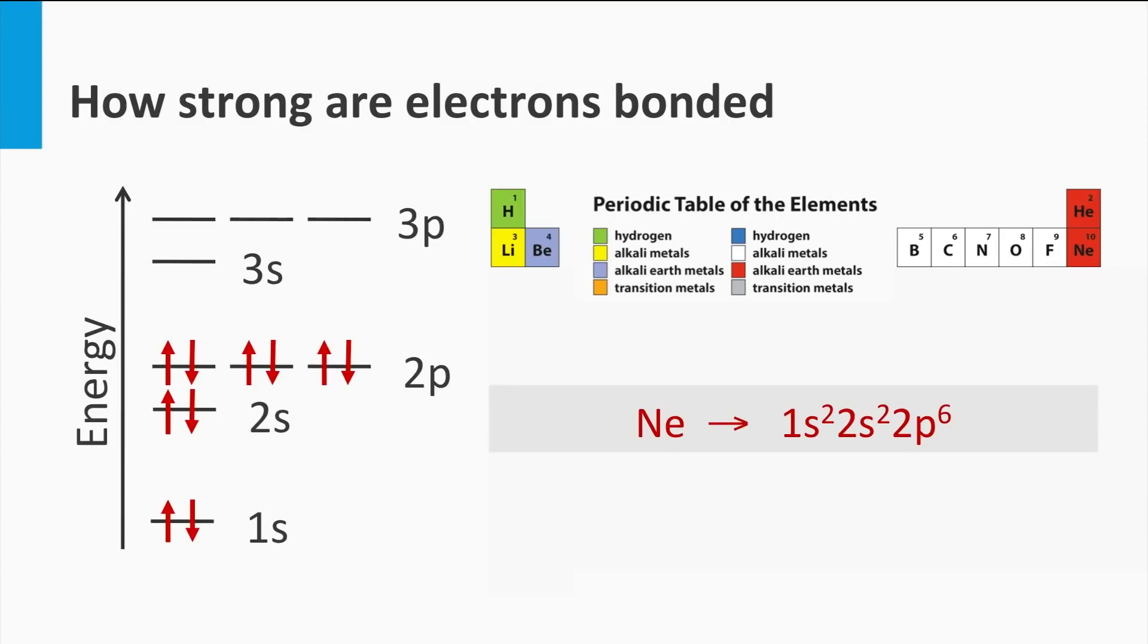The next element sodium fills the 3s state with 1 electron. The magnesium fully fills up the 3s state with 2 electrons. Aluminium fills up 3p state with 1 electron.